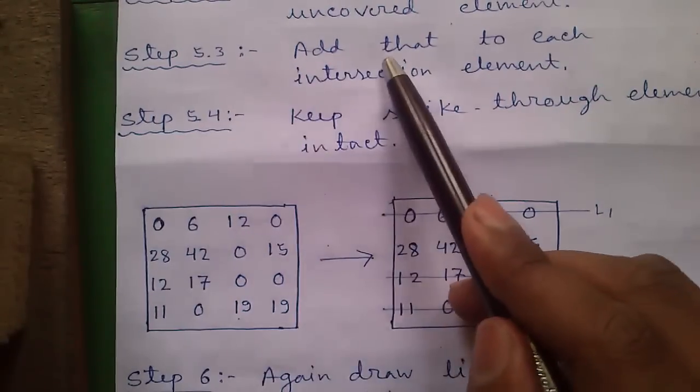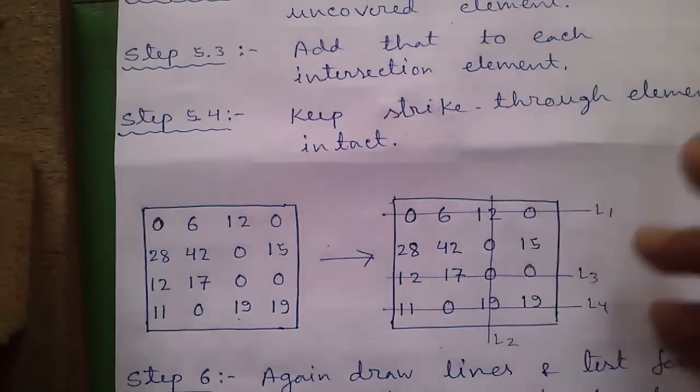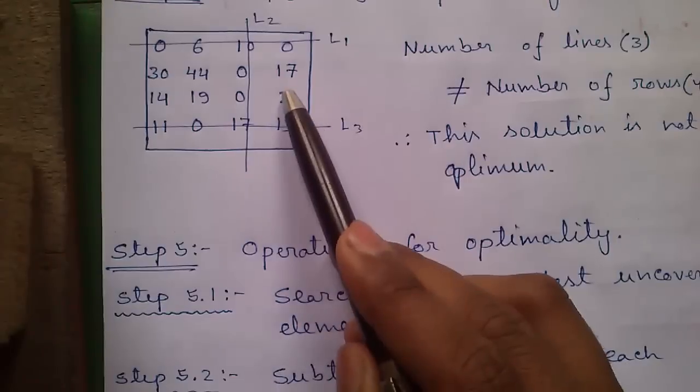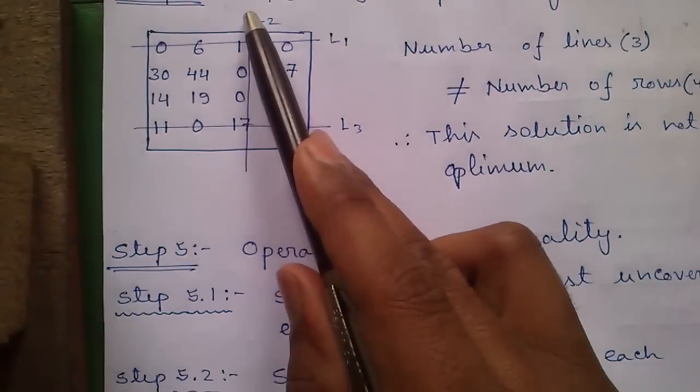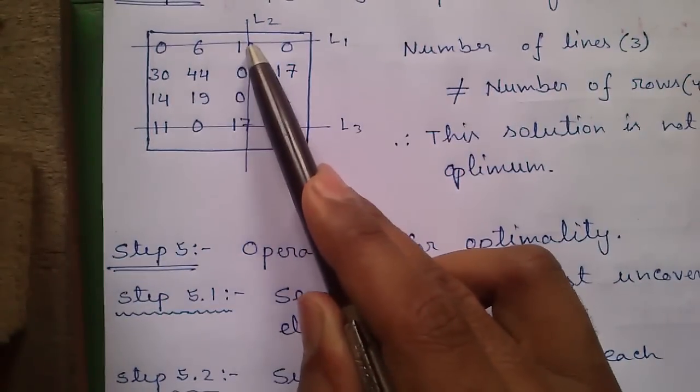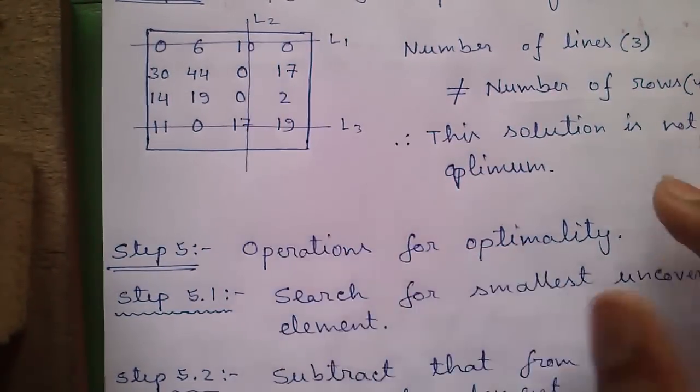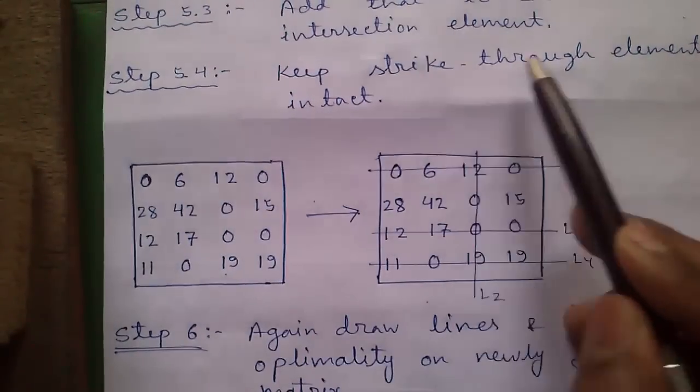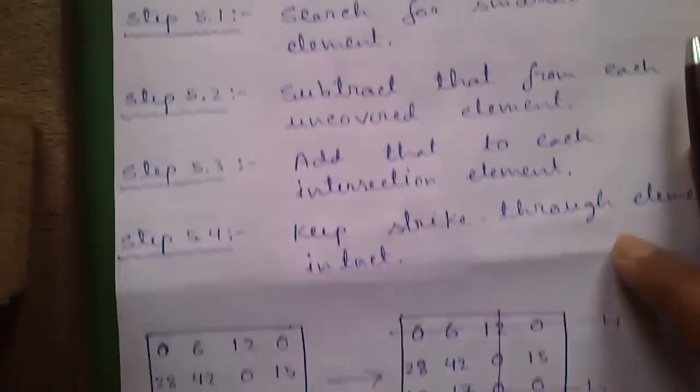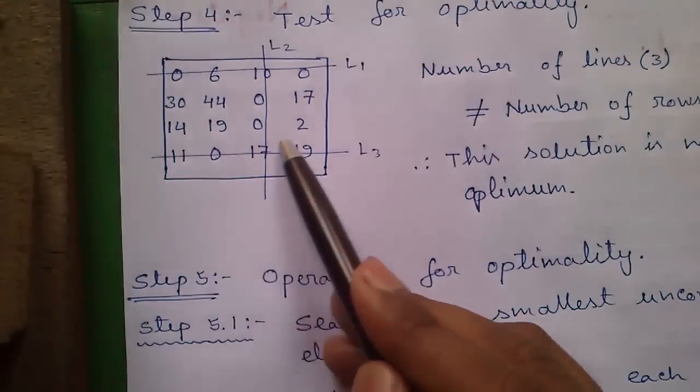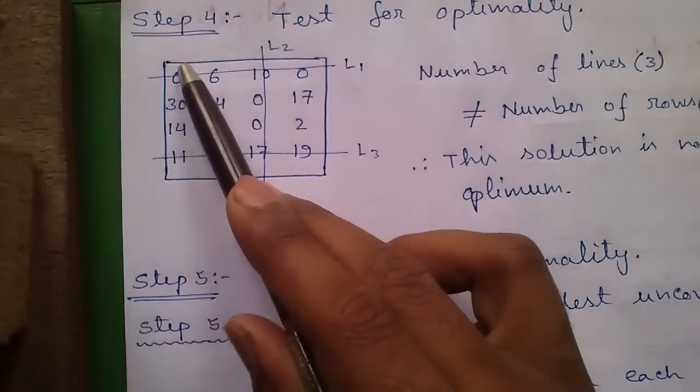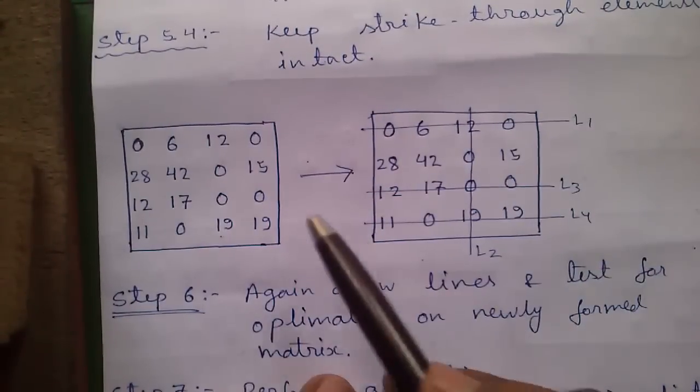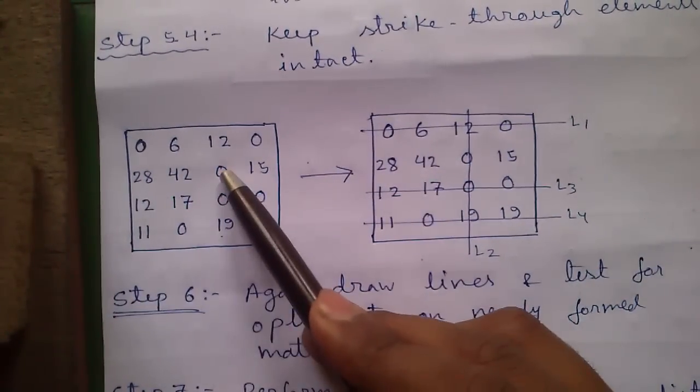Step 5.3, add that value to each intersection element. The smallest number 2 will be added to intersection elements. So here we will get 12 and here 19. Step 5.4, keep the strikethrough elements intact. Covered elements or strikethrough elements will be kept intact. By performing step 5 you will get our new matrix.